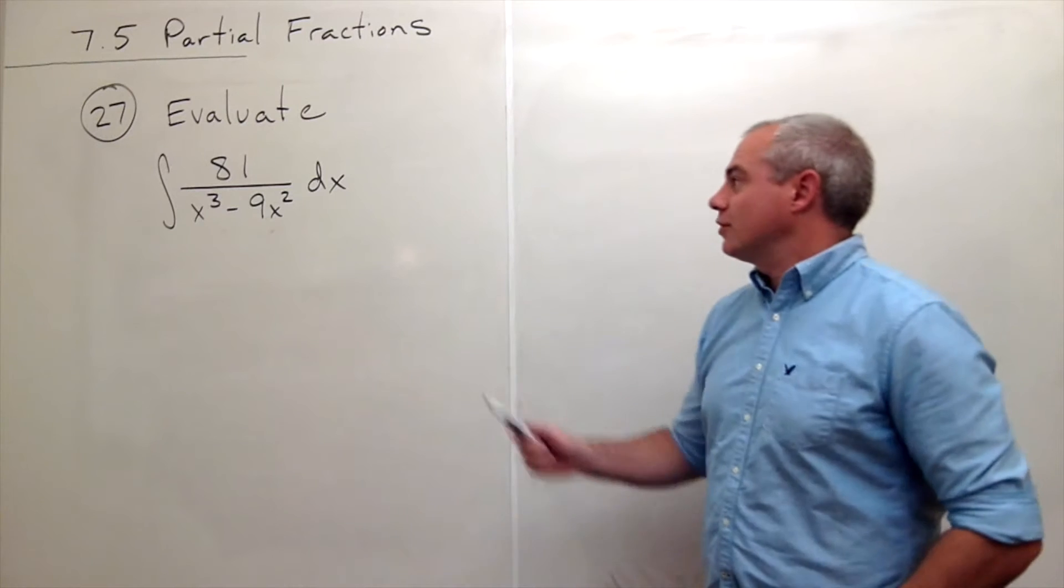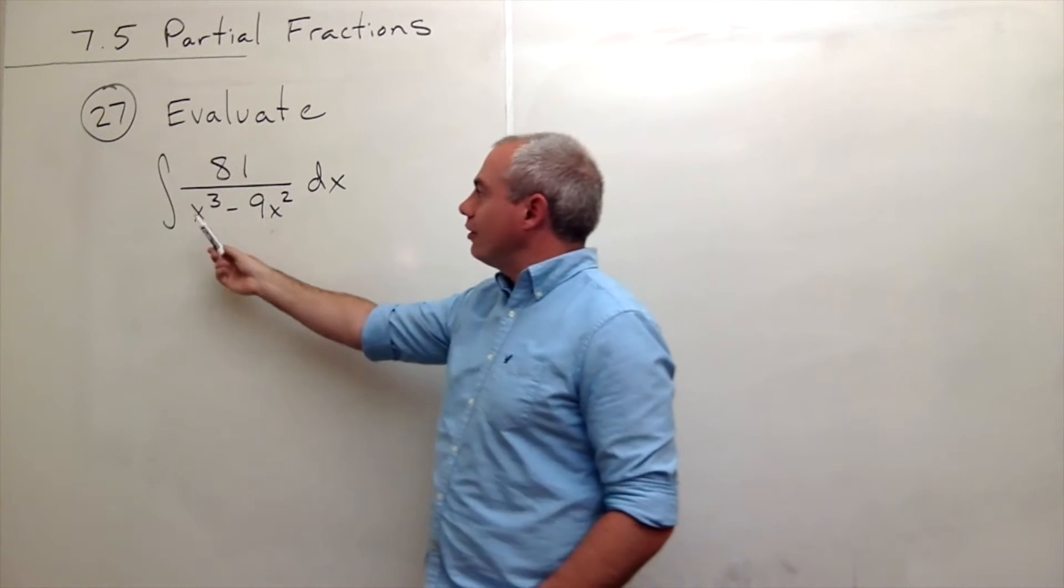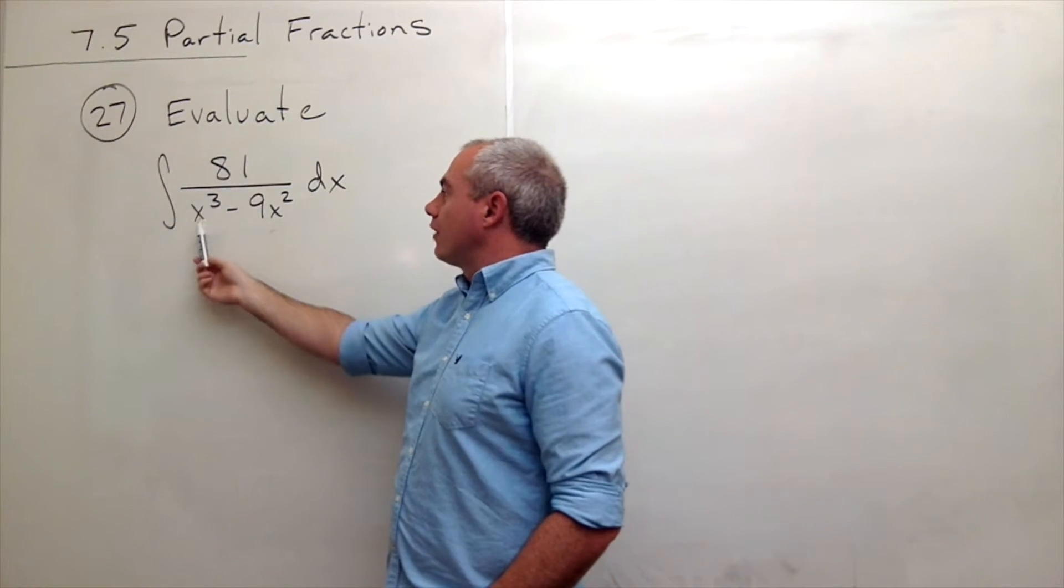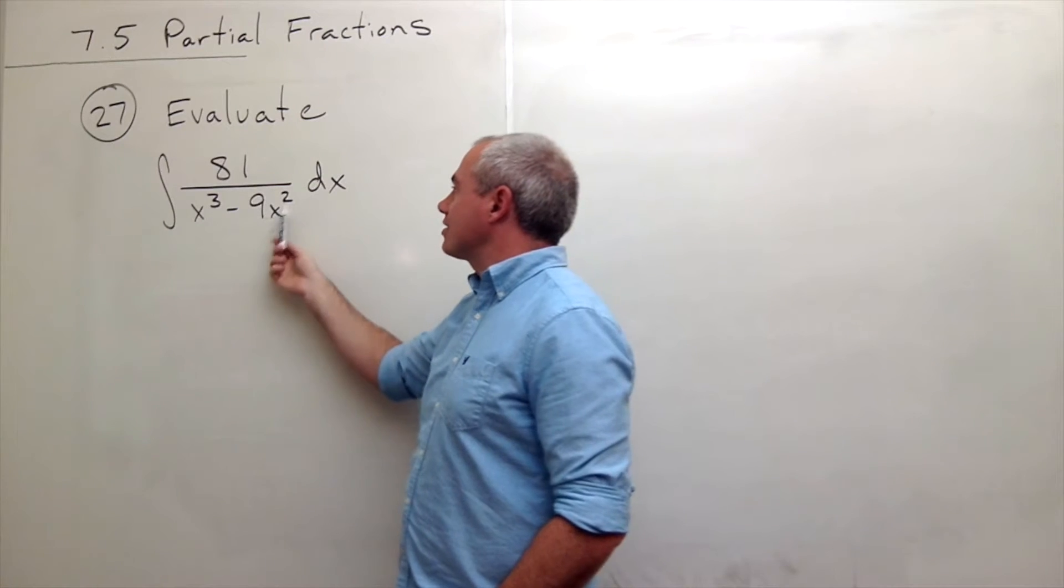In number 27, we'd like to evaluate the integral of 81 over x cubed minus 9x squared dx.